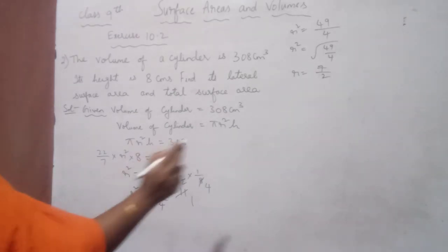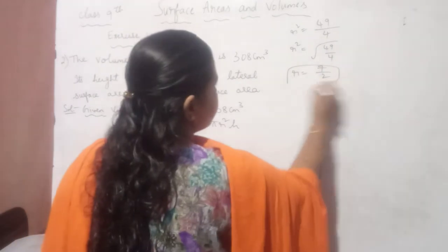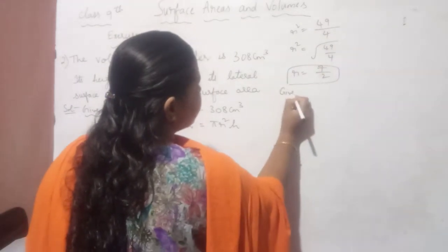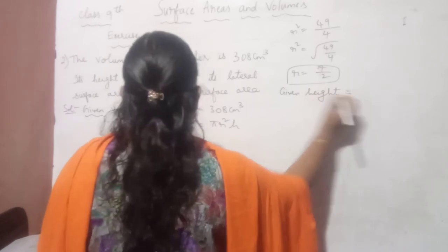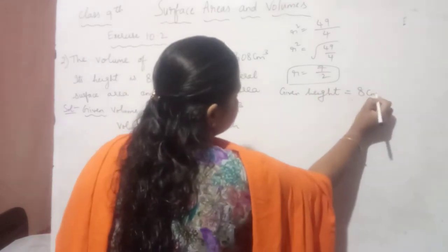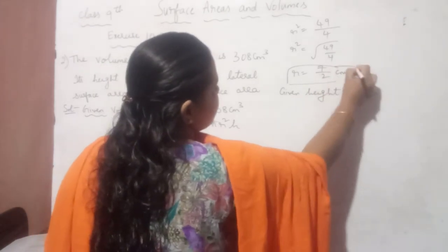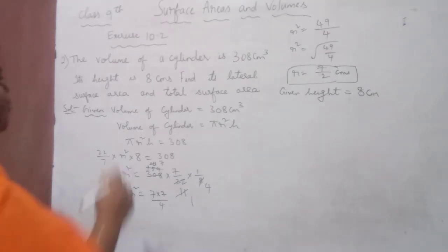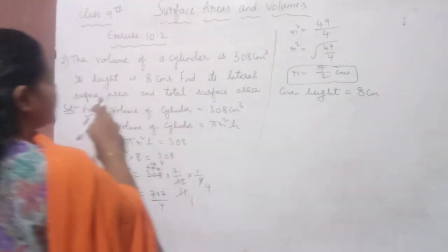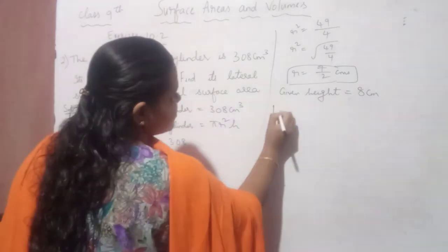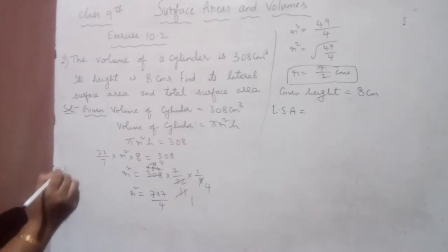Now we have the value of R = 7/2 cm. The given height H = 8 cm. The units are centimeters because the volume was given in cubic centimeters. Now we have to find the lateral surface area and total surface area.